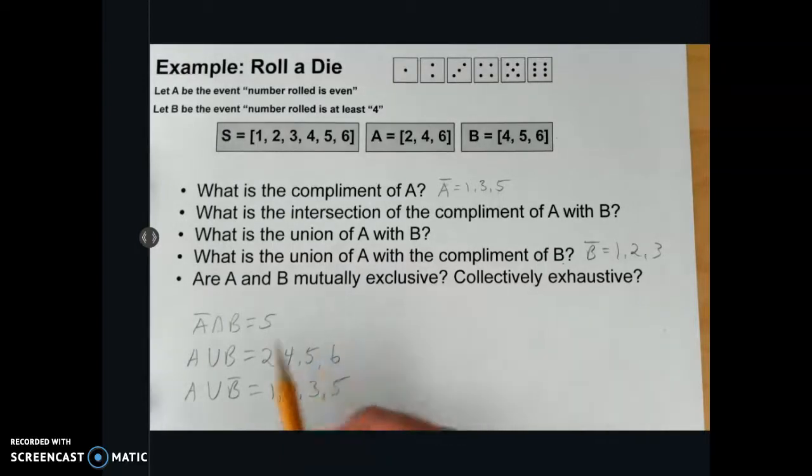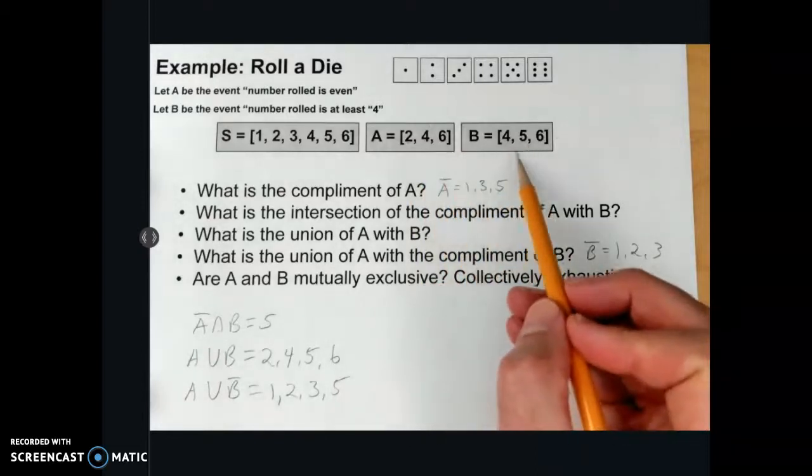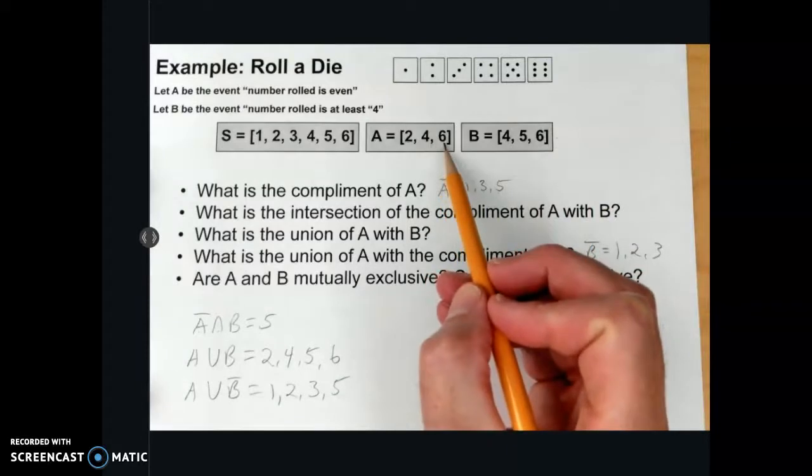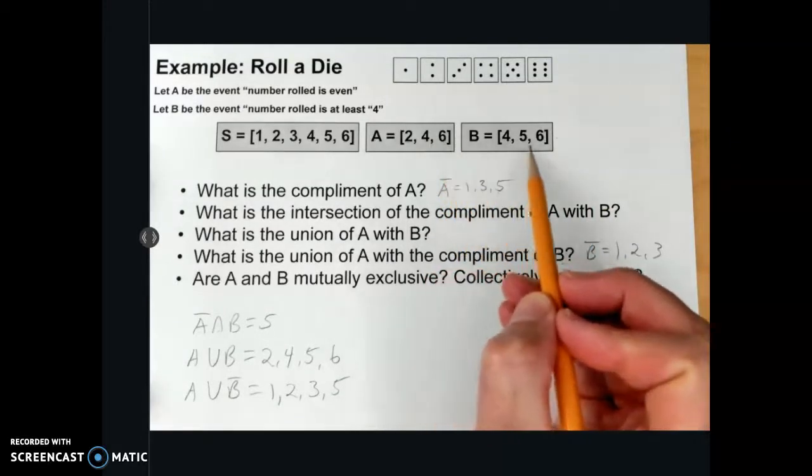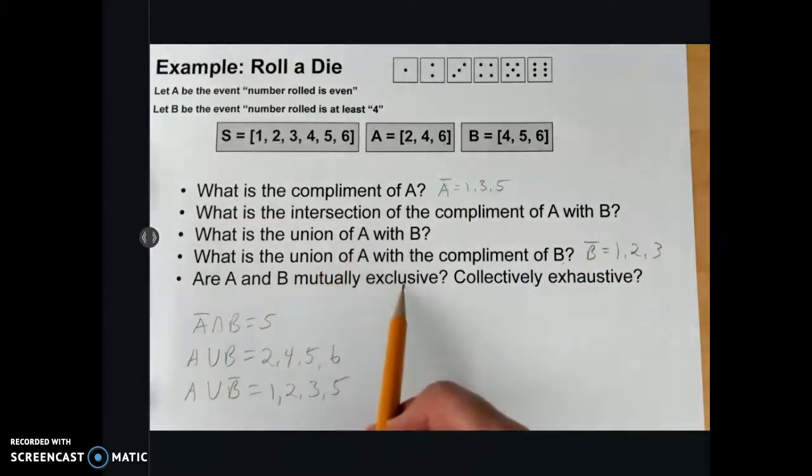And then finally, are A and B mutually exclusive? Collectively exhausted. Well, A has 2, 4, 6, and B has 4, 5, and 6. Note that 4 and 6 are part of A and B. So no, they cannot be mutually exclusive because there is an intersection.